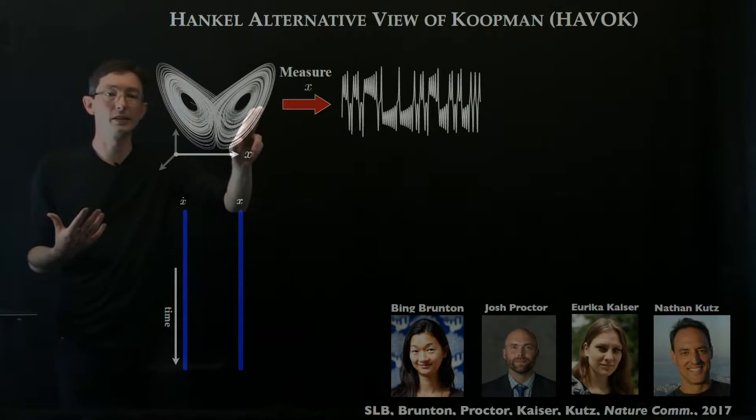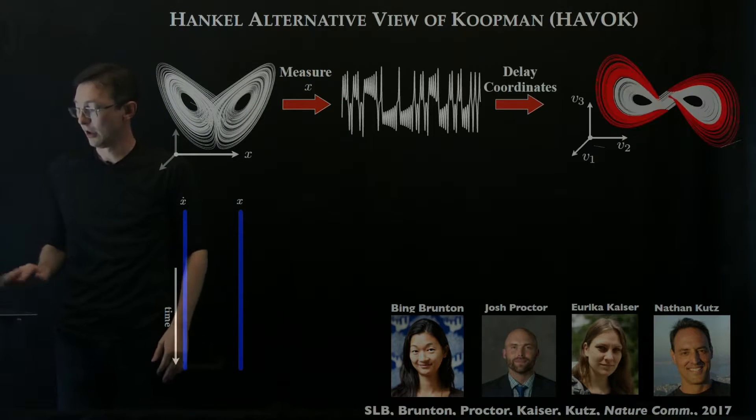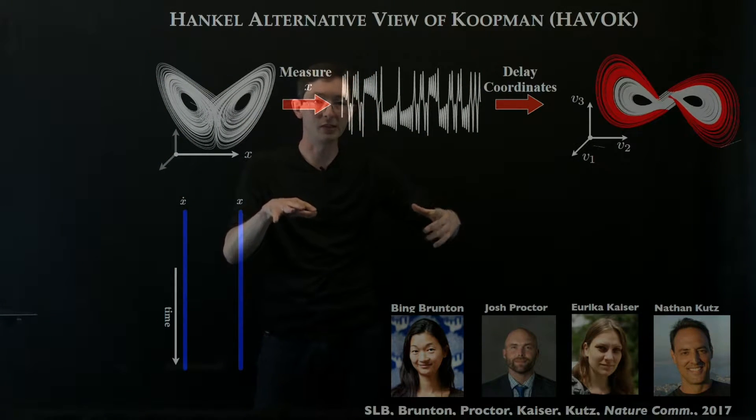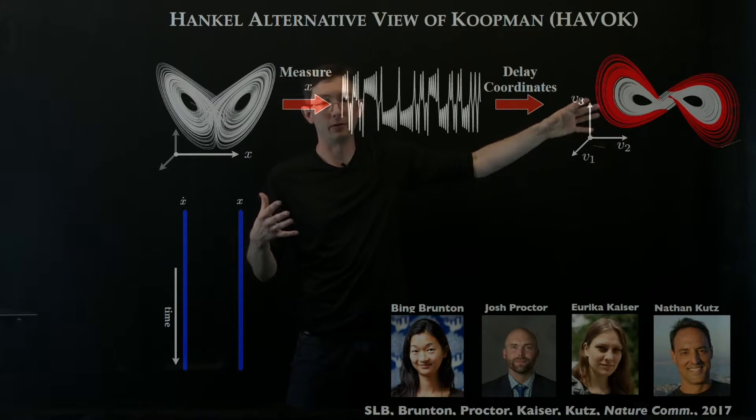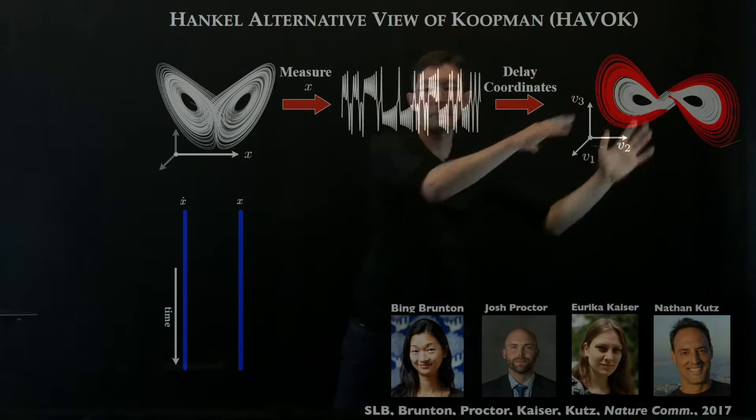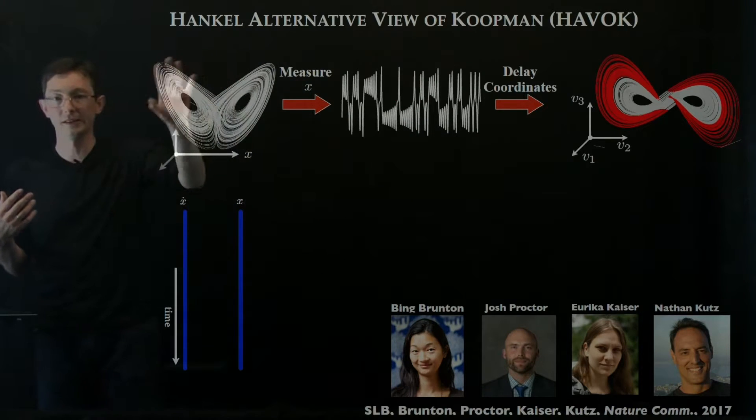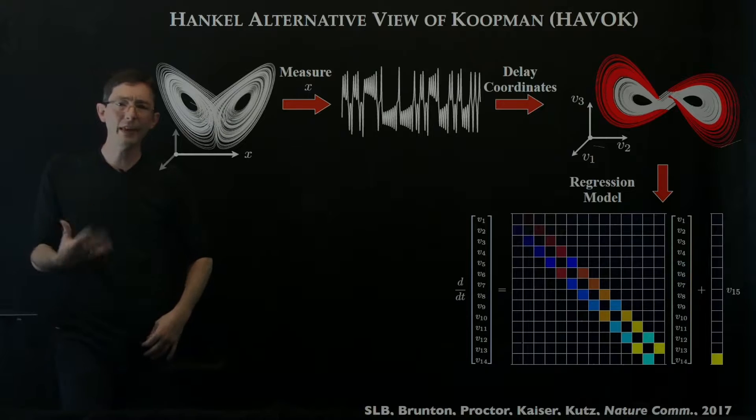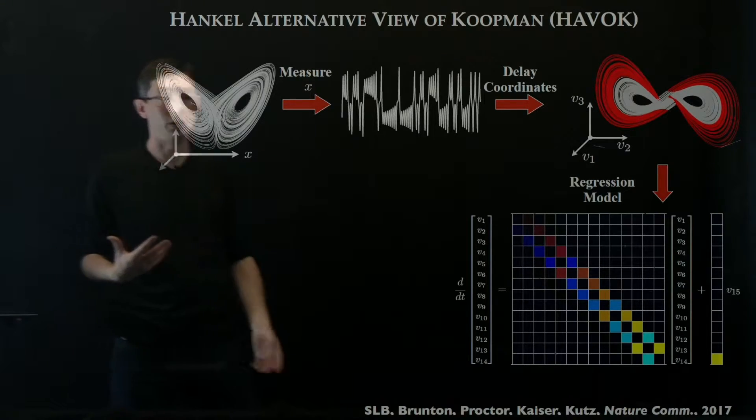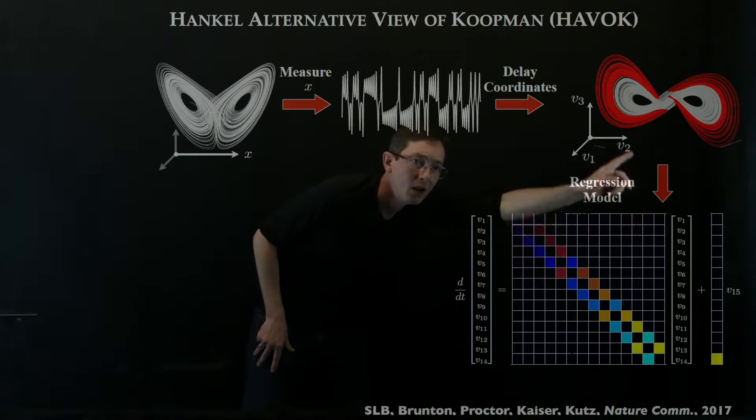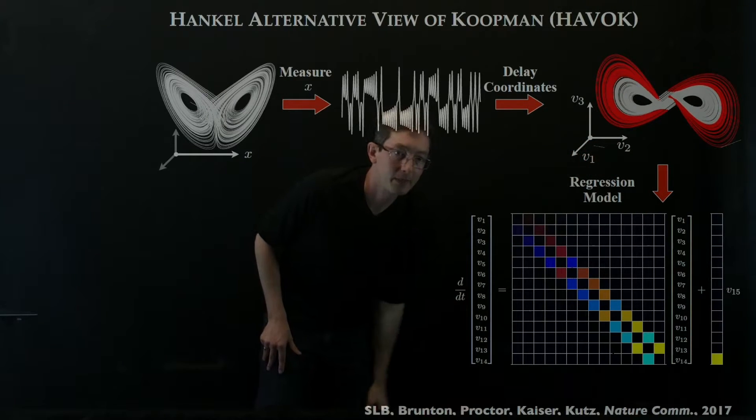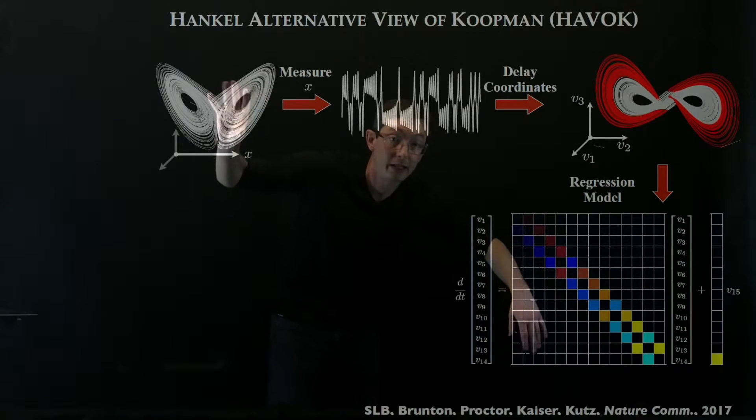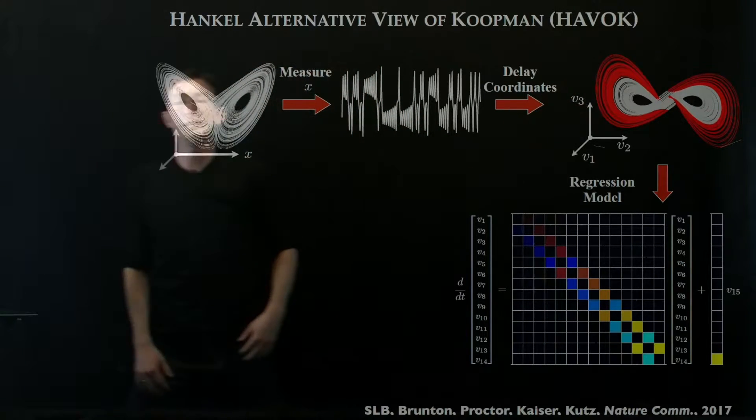What we did was we assumed we had measurements of x, we built some delay coordinates. So we would build a Hankel matrix and take the singular value decomposition and get these eigendelay coordinates. From x we can get this embedding that's diffeomorphic to this original attractor under some conditions. Then we would do a basic DMD regression model or a SINDY regression model of the dynamics in these coordinates. We found that you actually get a very linear dynamical structure even for strongly chaotic systems in these delay coordinates.